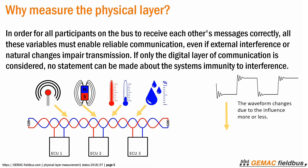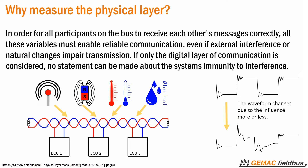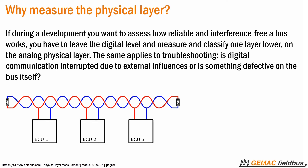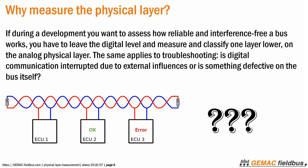If only the digital layer of communication is considered, no statement can be made about the system's immunity to interference. If during a development you want to assess how reliable and interference-free a bus works, you have to leave the digital level and measure one layer lower on the analog physical layer. The same applies to troubleshooting: is digital communication interrupted due to external influences, or is something defective in the bus itself?